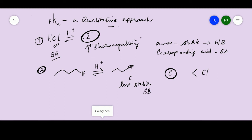If the conjugate base is a strong base, the corresponding acid is going to be a weak acid. What you need to know is the electronegativity of atoms — if you know the electronegativity of atoms you can compare easily. So butane gives a weak acid, while HCl is a strong acid. We are not considering any pKa value; we are just giving a prediction of which among the two could be the stronger acid.